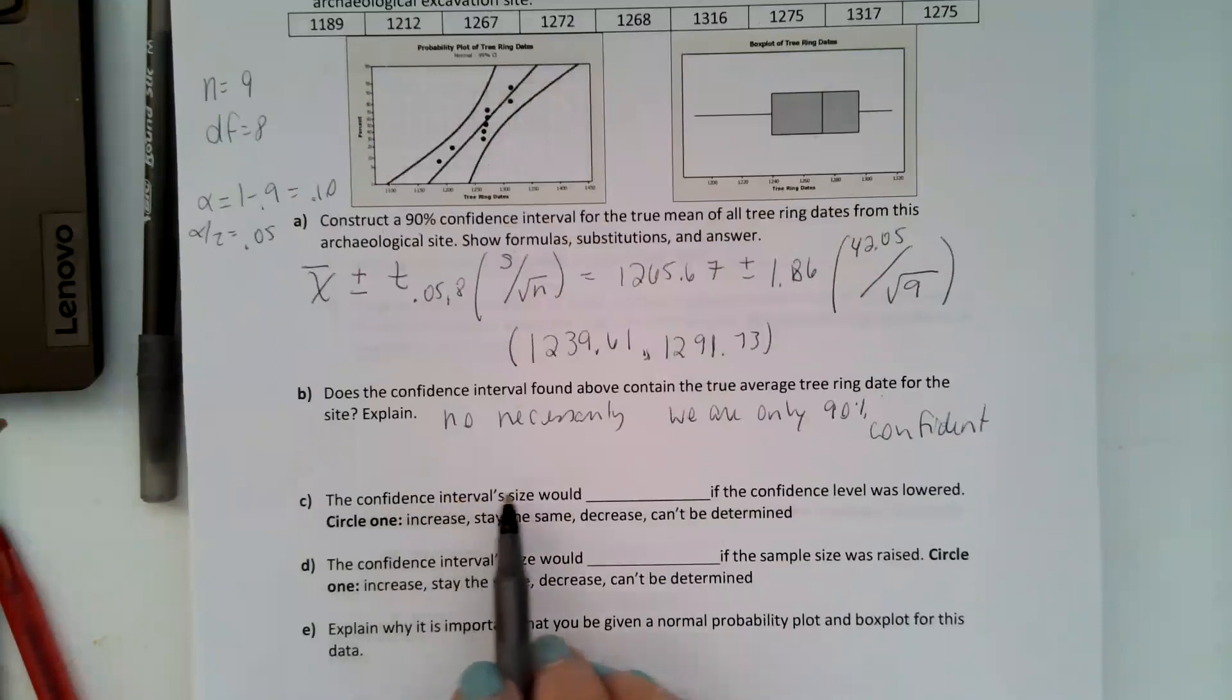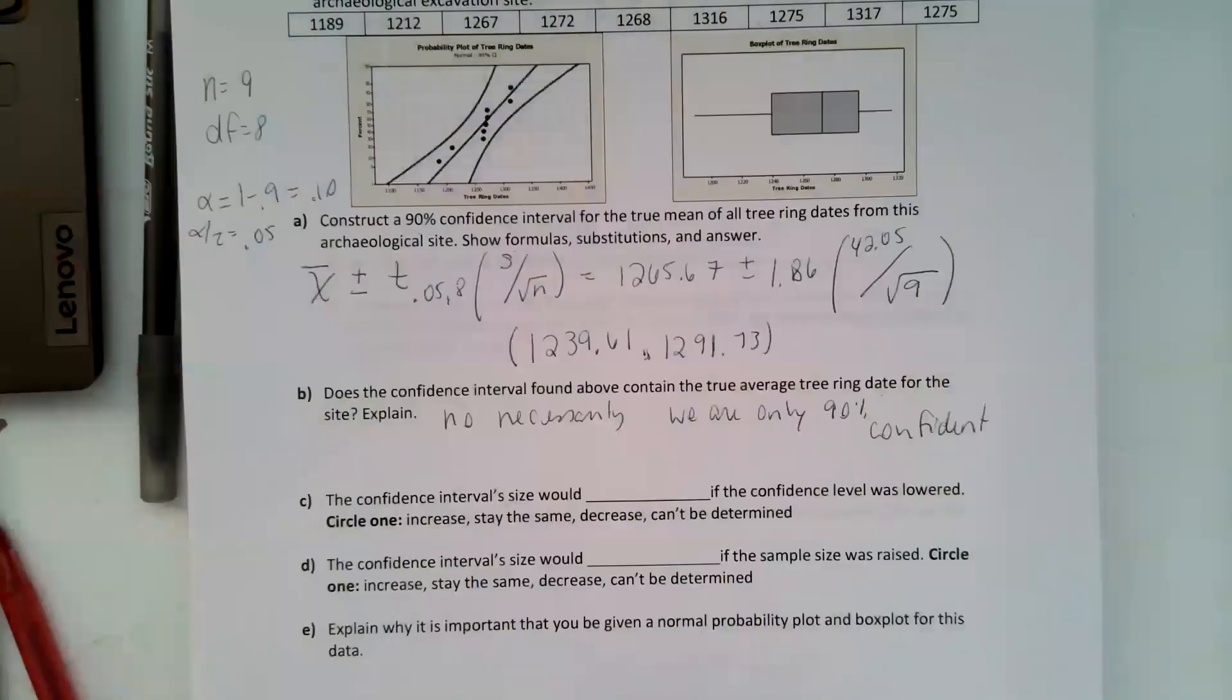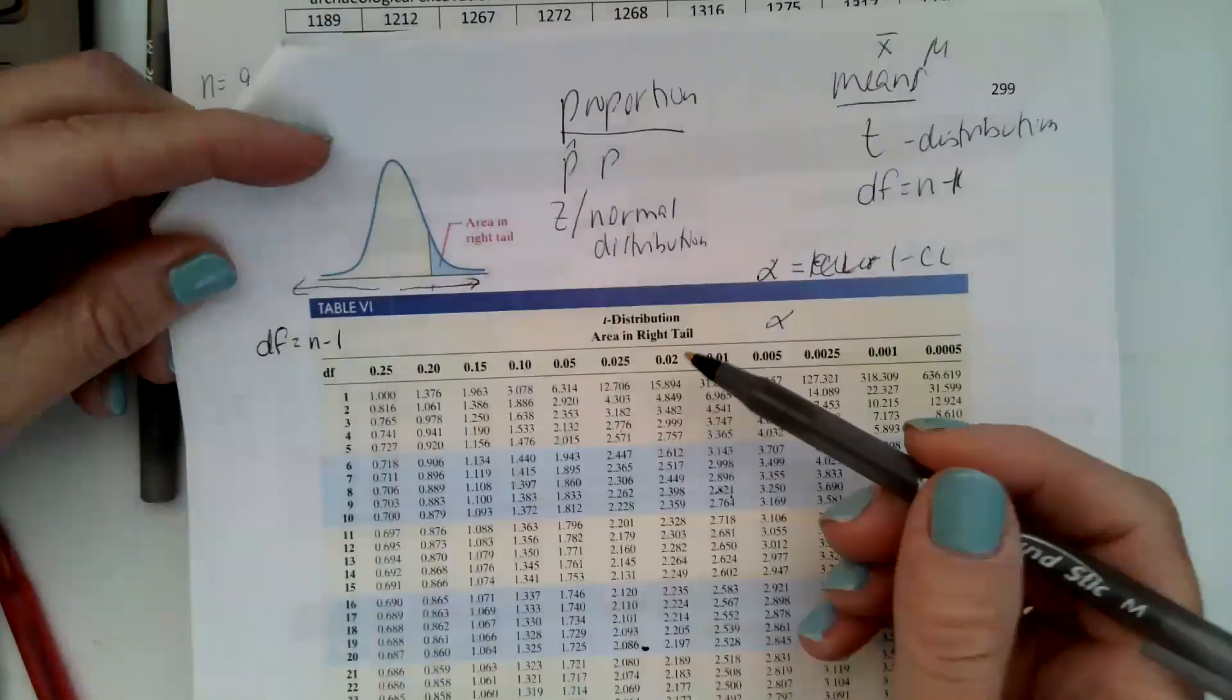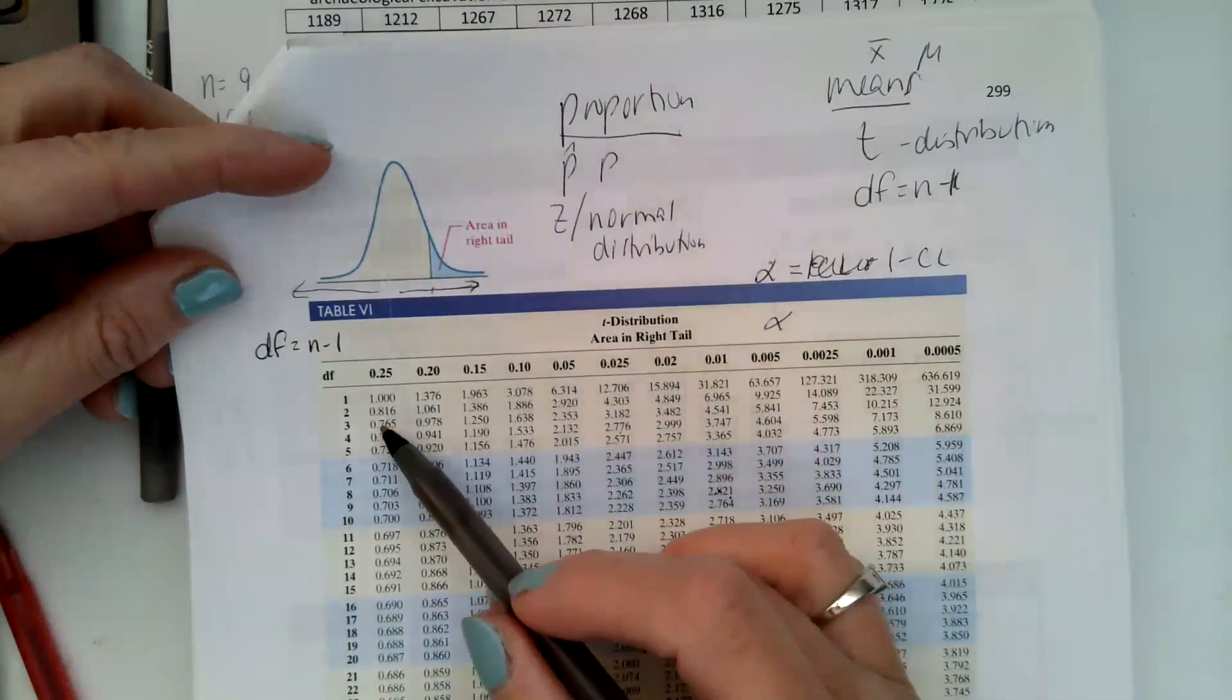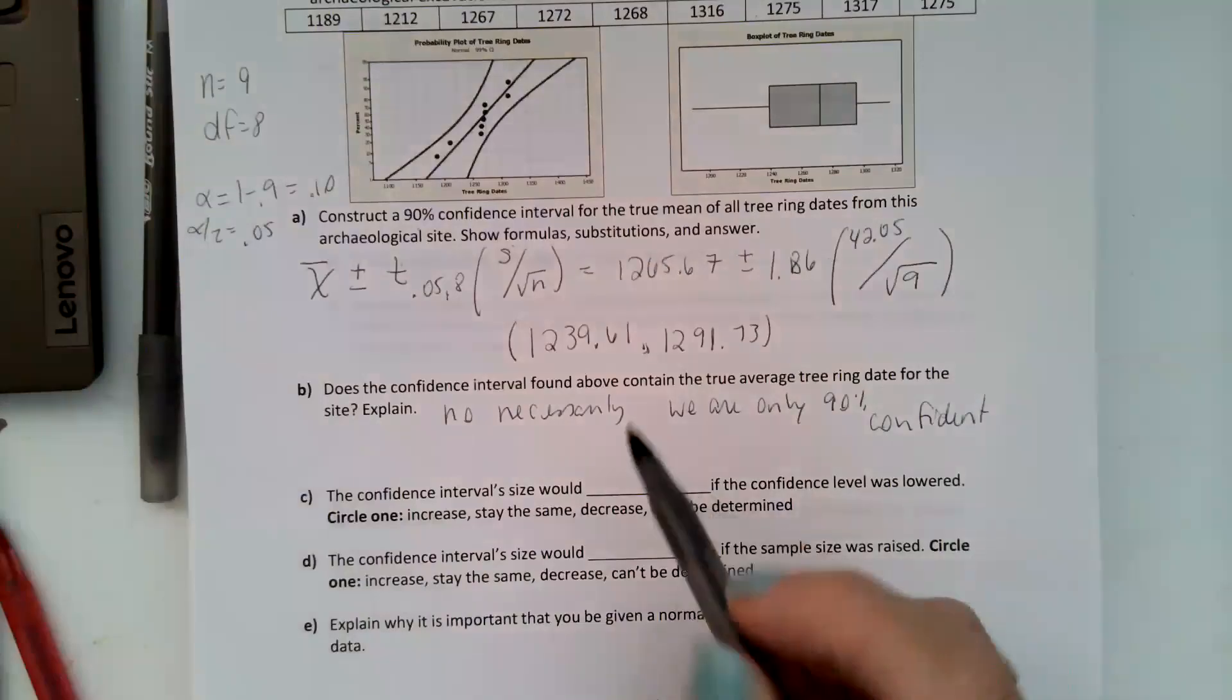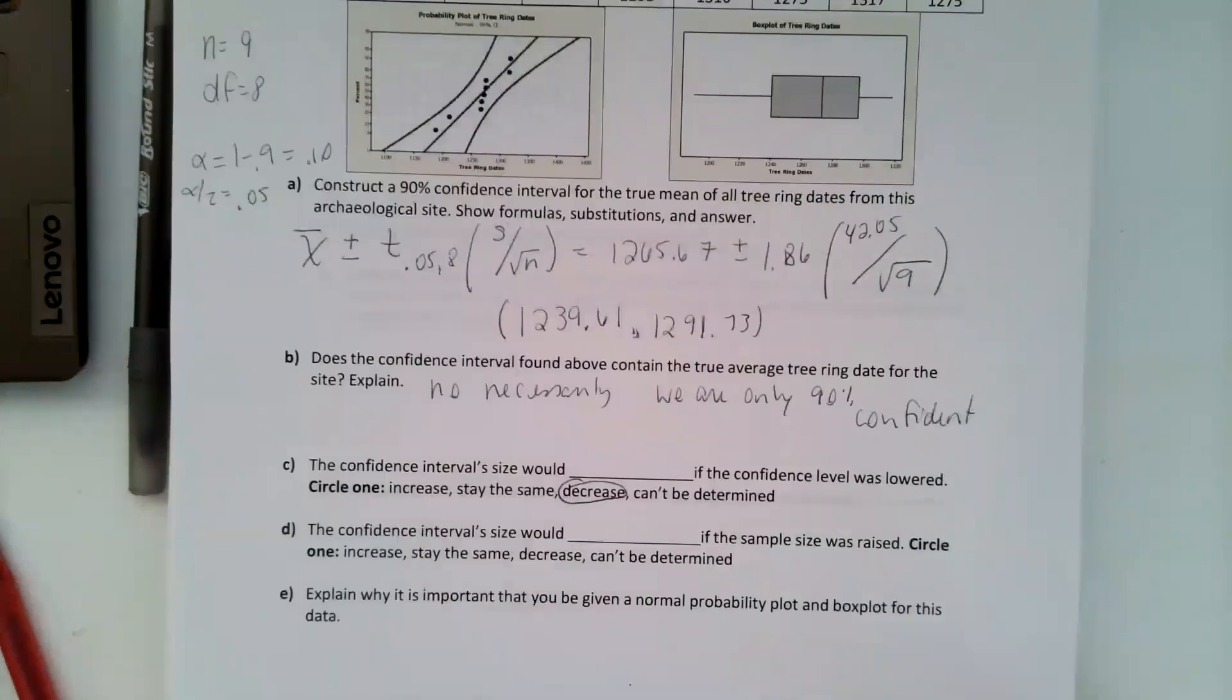The confidence interval size would blank if the confidence level was lowered. Okay, so if the confidence level is lowered, when the confidence level lowers, alpha gets bigger. So alpha is getting bigger going to the left. So when alpha gets bigger our t values get smaller. So when our t value right here gets smaller our interval will decrease.